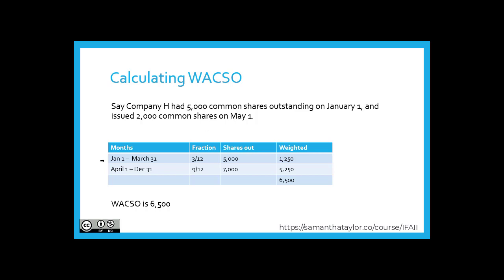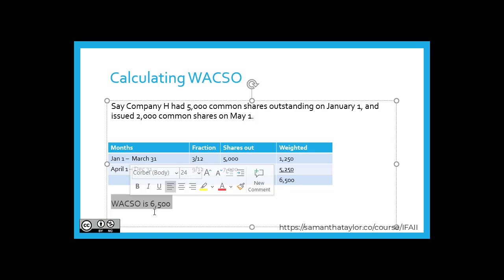Then, from April 1st to December 31st, the remainder of the year, because nothing else happened, we had 7,000 shares outstanding — the 5,000 plus the 2,000 that were issued. The weighted average for this period is nine-twelfths times 7,000, which equals 5,250. The sum of these two parts of the year equals 6,500, so our weighted average common shares outstanding for the year is 6,500.